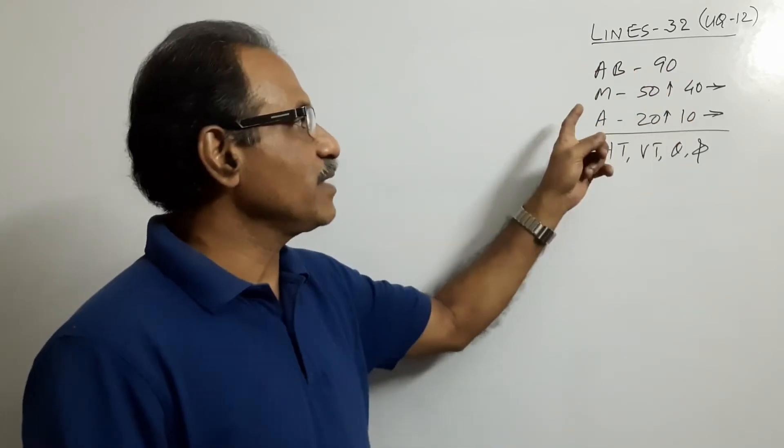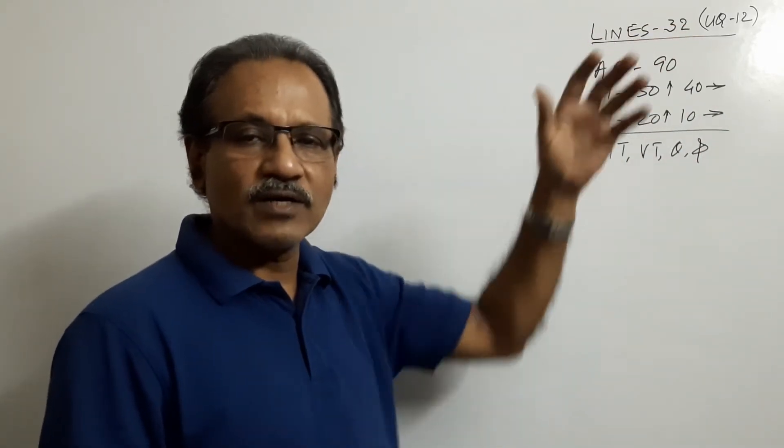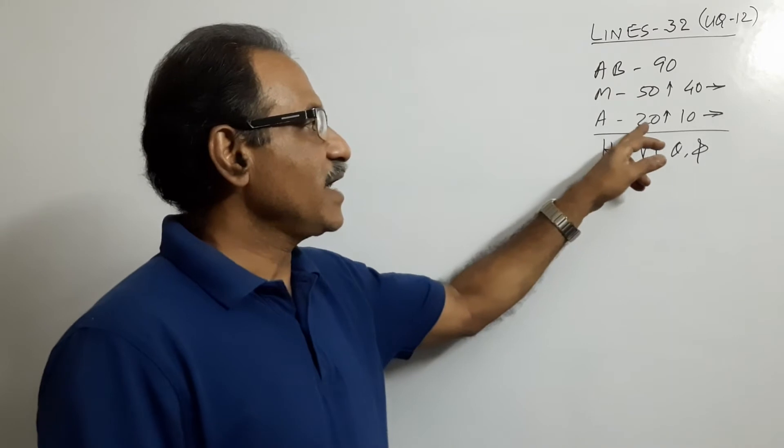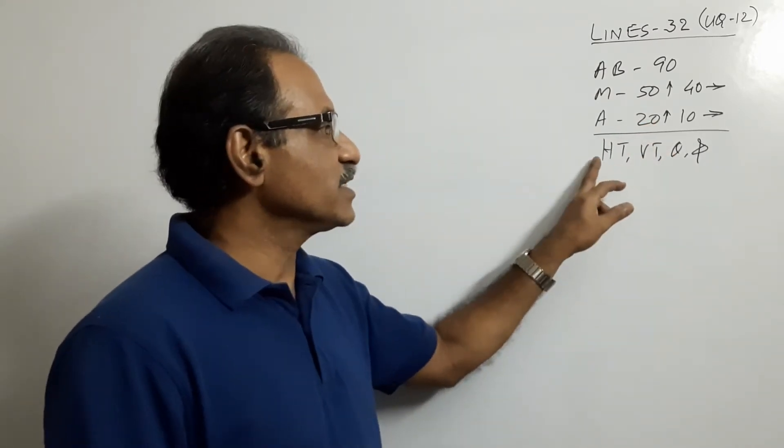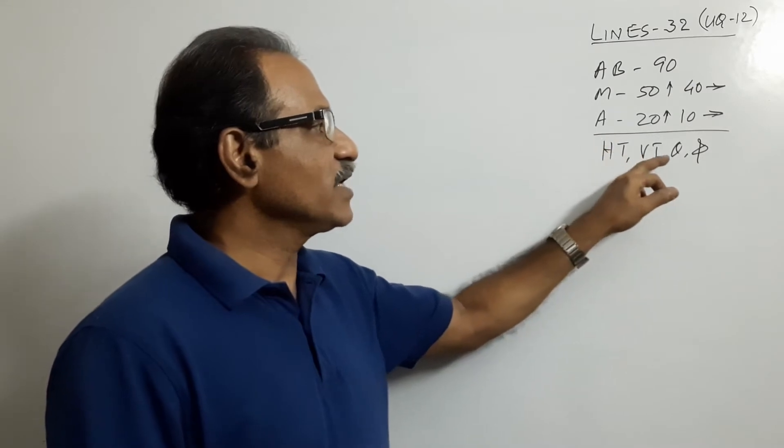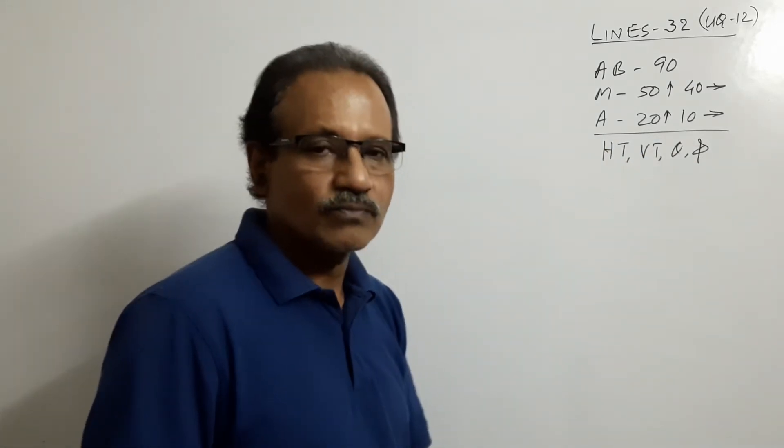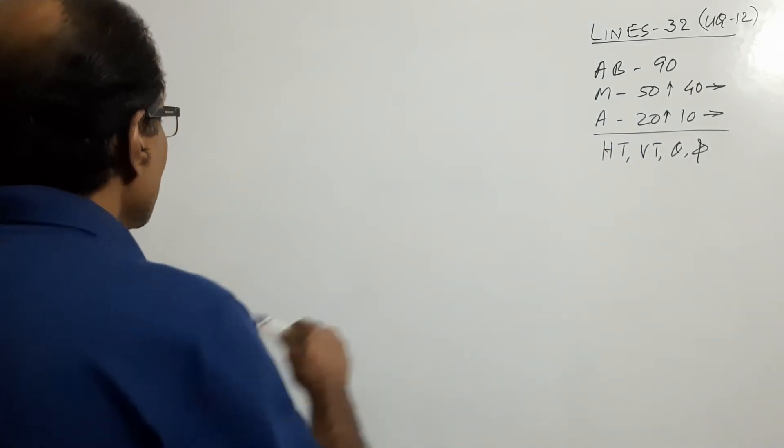Line 90mm, midpoint 50mm above, 40mm in front. A is 20mm above, 10mm in front. Projections HT, VT, theta, phi. This is the question. I draw an XY line.